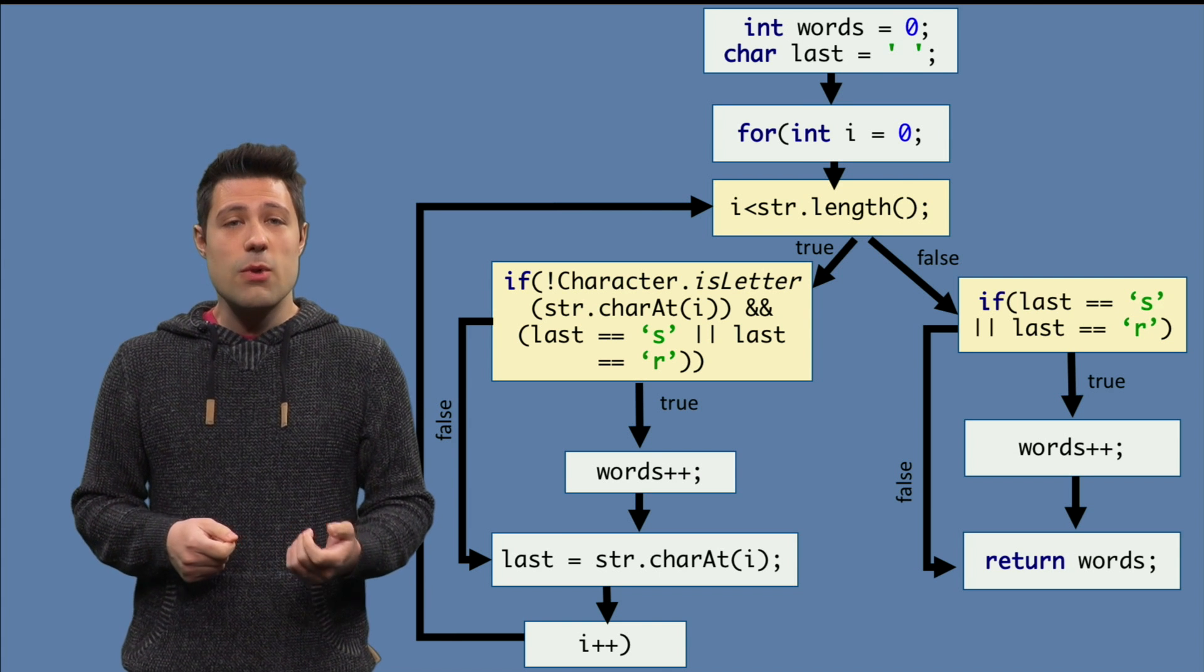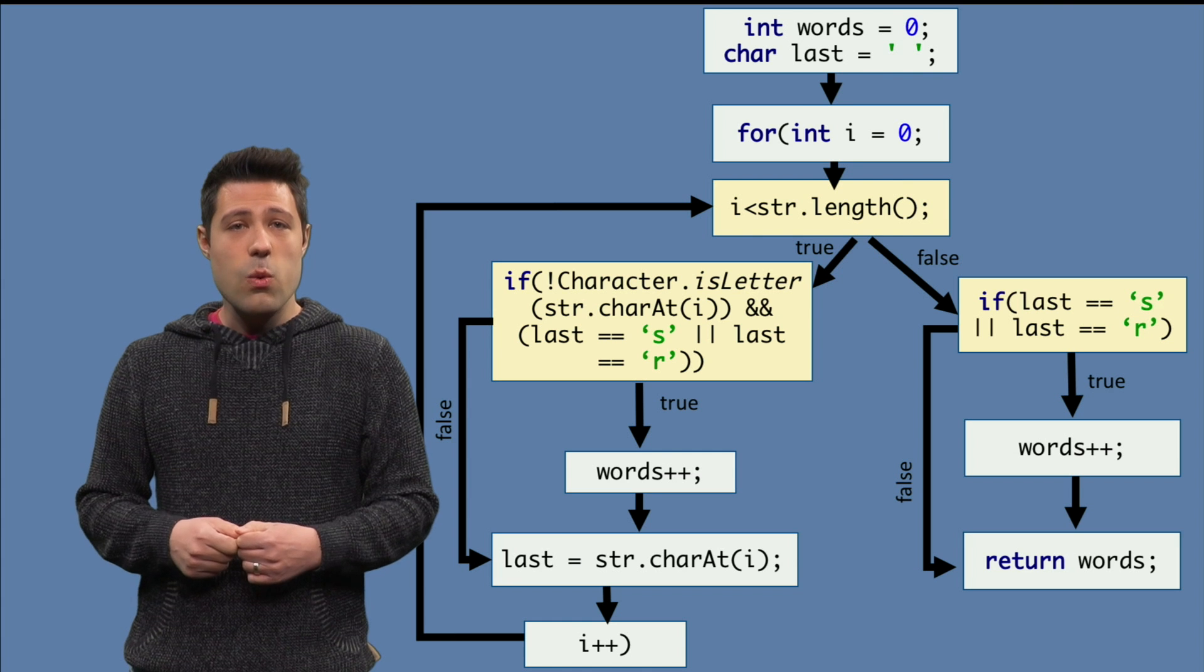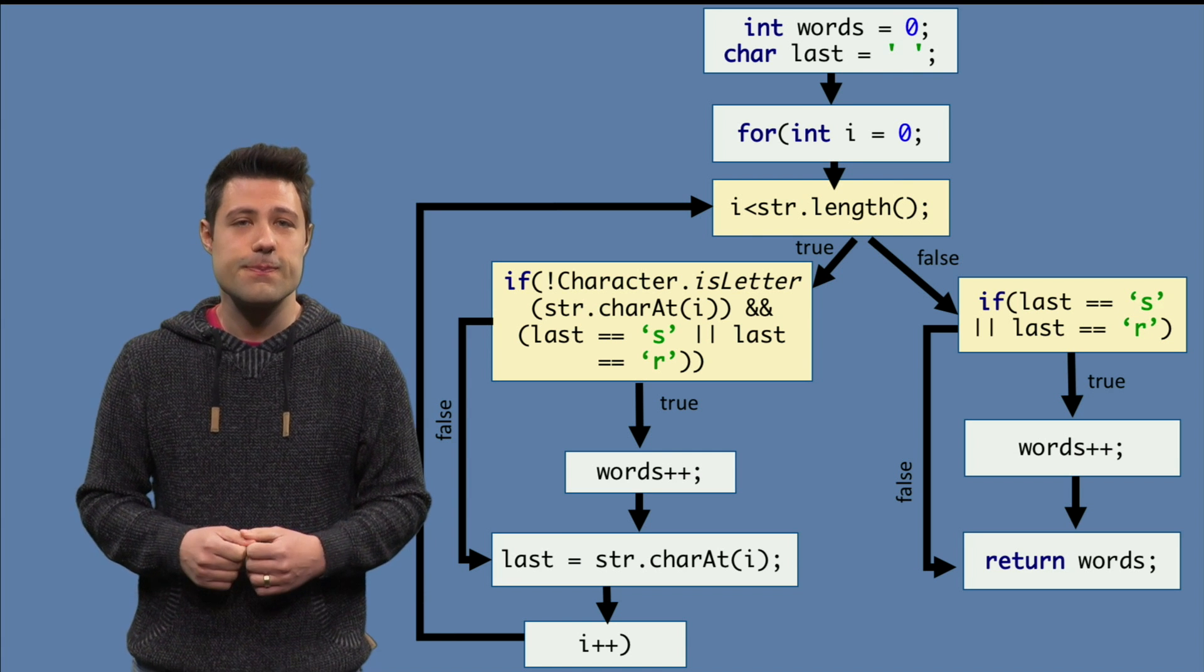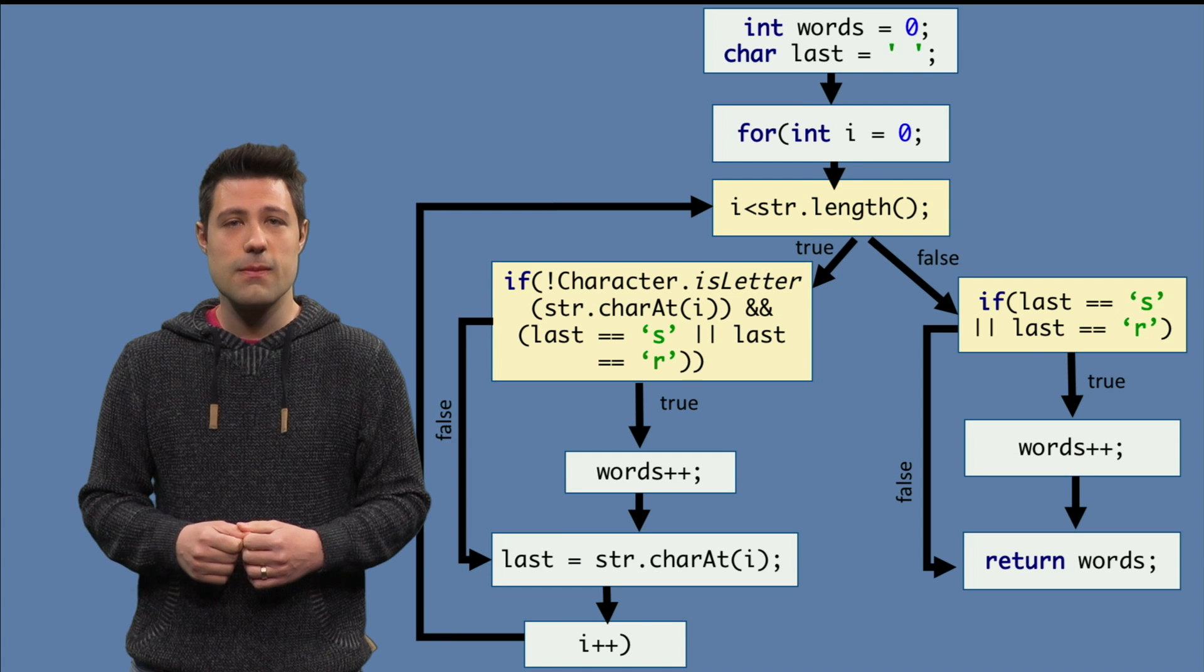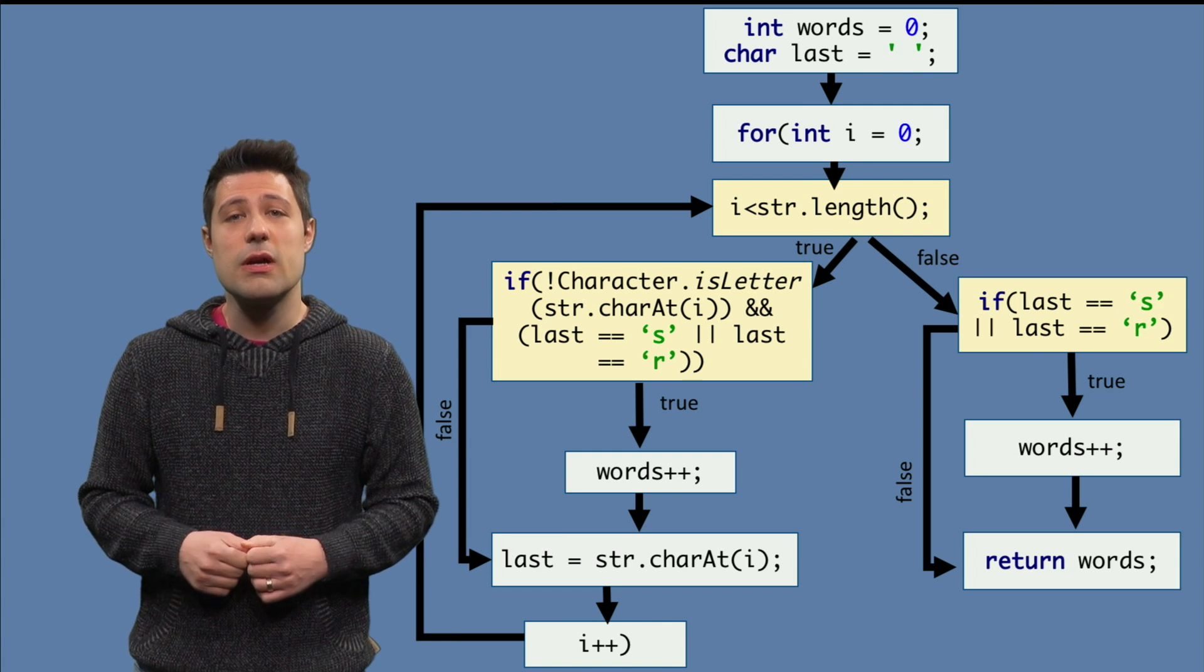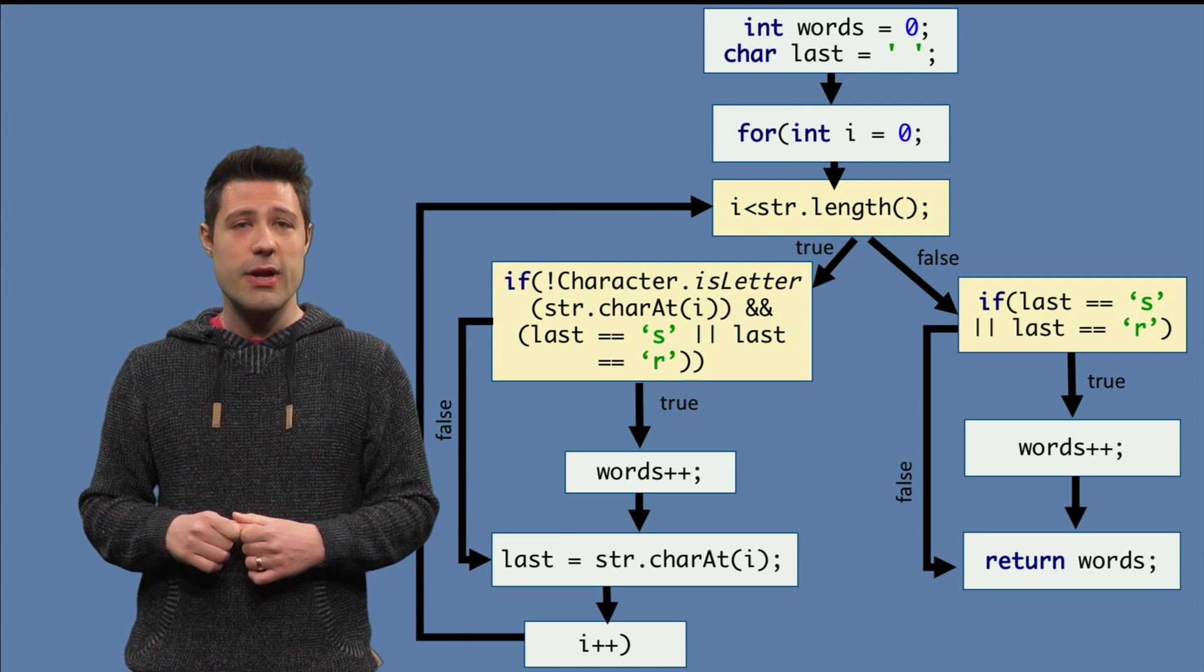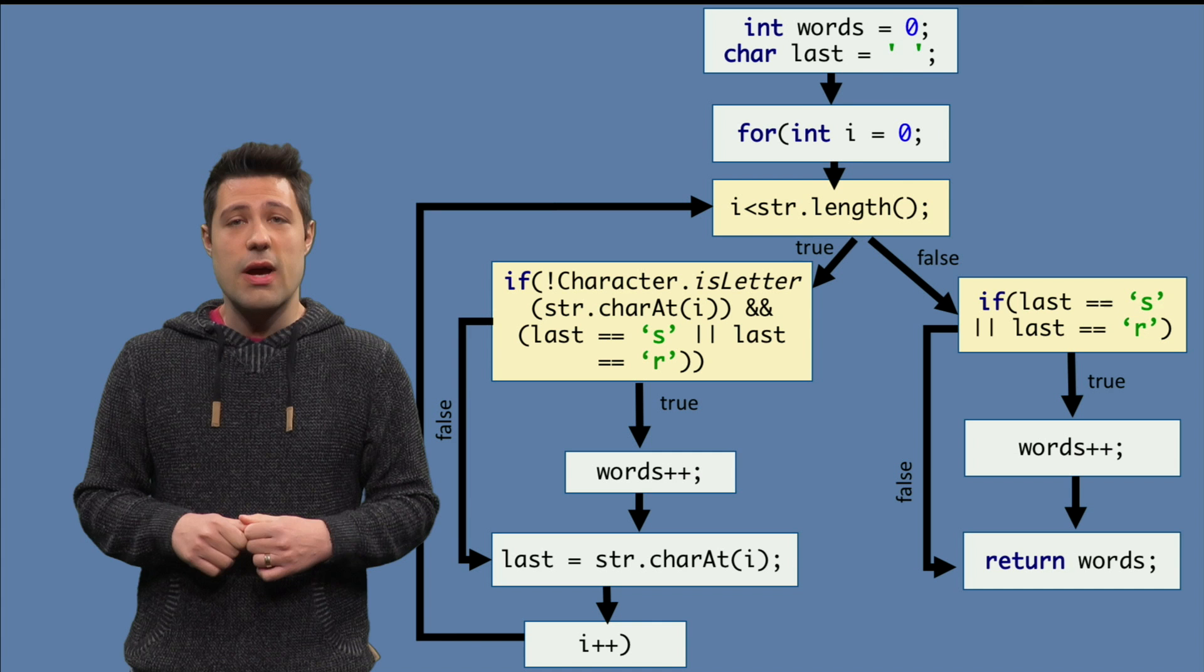Pause this video for a moment and take a look at this control flow graph. What could be better than lines of code as criterion here? A better criteria here would be to make sure we have at least one test for each branch, or for each arrow in the graph.